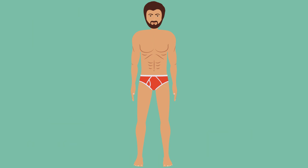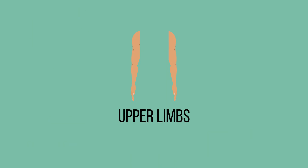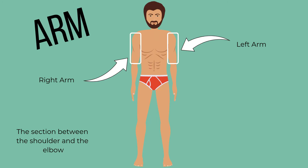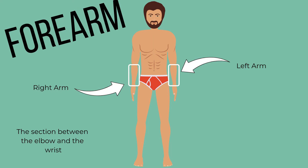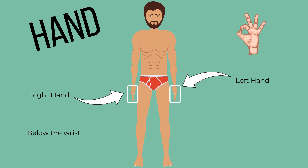Now for the upper body we have the upper limbs. They comprise of the arms, which is the section between the shoulders and the elbows. The forearms, which is the section between the elbows and the wrists. And below the wrists we have the hands.